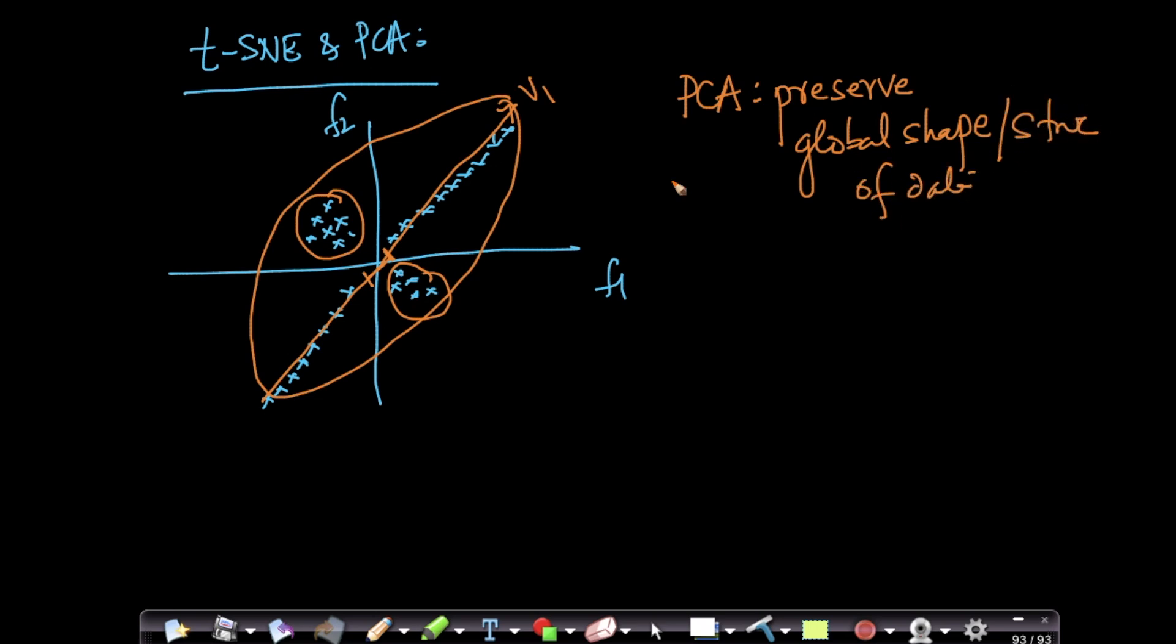You might say, you're calling it global structure because it's trying to preserve all the variance, because variance maximization is a form of global shape or structure. But there is also local structure here. What does local structure mean? Local structure means that this point is closer to this point and this point is closer to this point. So all these points are close to each other.